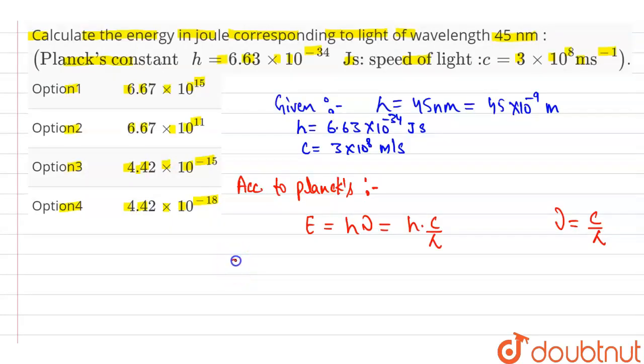Put the value of h, 6.63 × 10^-34, into the speed of light 3 × 10^8, and the wavelength of light is 45 × 10^-9.